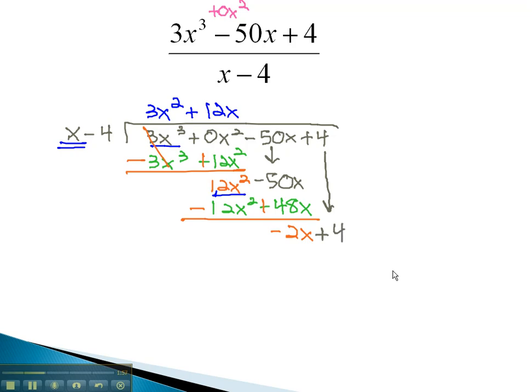Bringing down the last term, which is a 4, will set us up to finish the problem. Dividing the front terms, negative 2x, dividing out an x gives us negative 2. We will then multiply the negative 2 to get negative 2x plus 8. Changing the signs to positive and negative will allow us to combine, giving us negative 4 for our remainder.